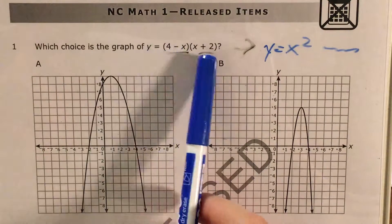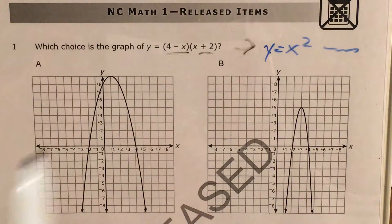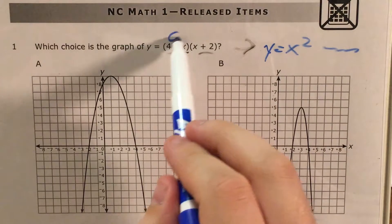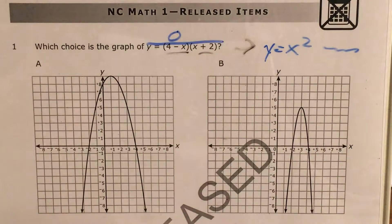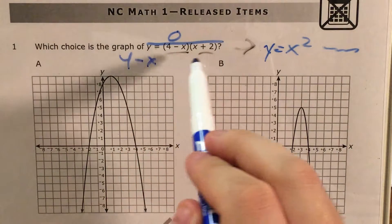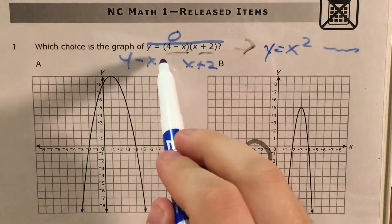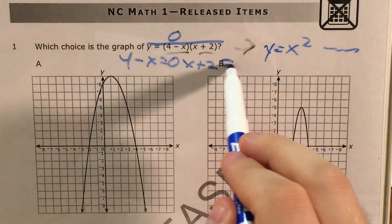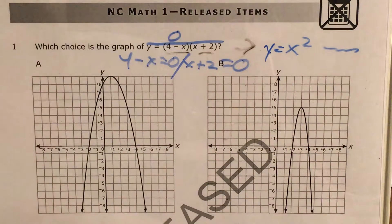And if we look at these linear factors, and we remember that if one of these is 0, then the whole thing is 0, then all we have to do is figure out for 4 minus x and x plus 2, what number would make both of these equal 0?